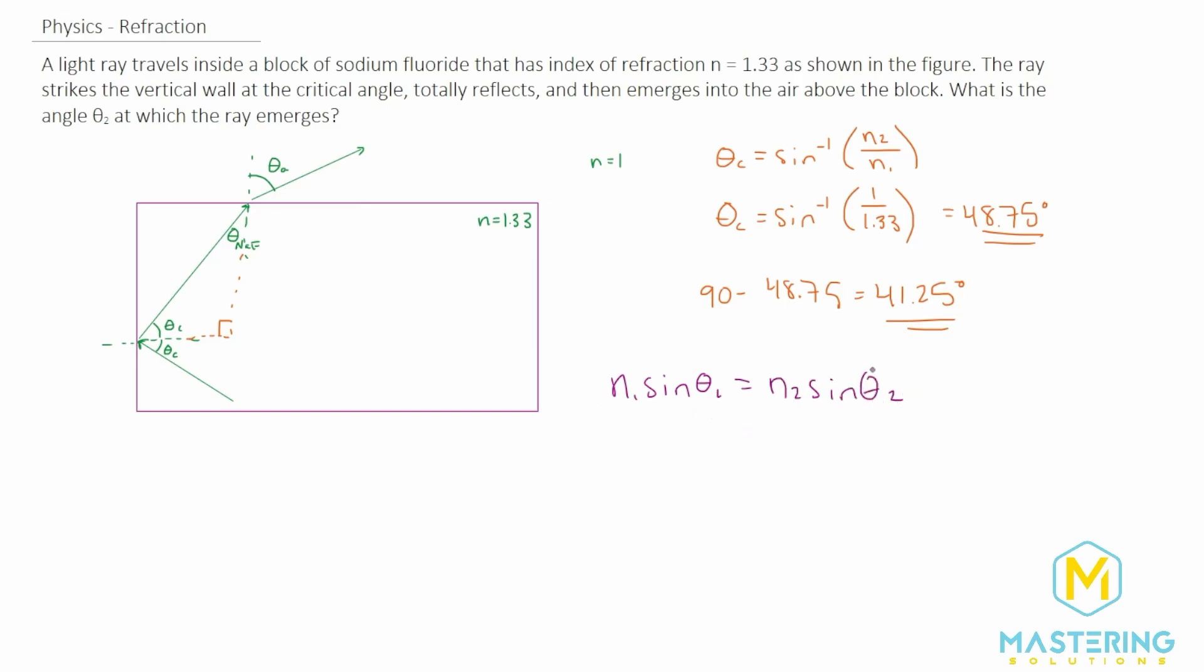Now theta two, this is what we're trying to solve for. This is the one for air. So N of A sine theta A. And then this is the sodium fluoride. So that's going to be N sub N for sodium fluoride sine theta capital N.